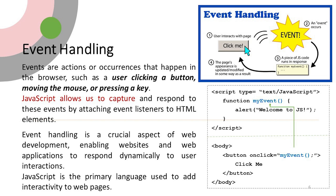Our websites now have life due to JavaScript, so they can interact with users without a developer present. JavaScript is the primary language used to add interactivity to web pages. For example, there is a button called 'Click Me' — when you click it, that event is generated, it calls a JavaScript method, which executes and creates the required changes in the web page.